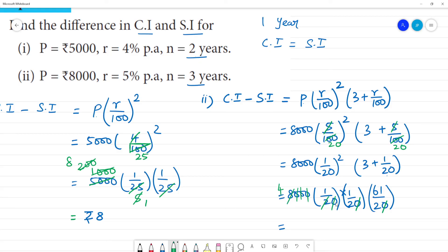So what is the remaining is 61 rupees. What is the difference between simple interest and compound interest is 61 rupees. Clear?